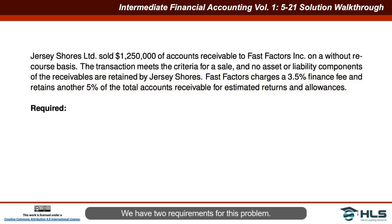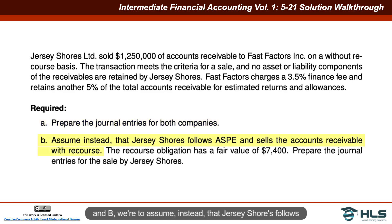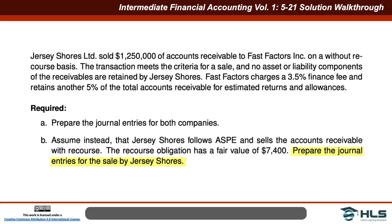We have two requirements for this problem. Requirement A is to prepare the journal entries for both companies. Requirement B assumes instead that Jersey Shore's follows ASPE and sells the accounts receivable with recourse — the obligation has a fair value of $7,400 — and we want to prepare the entries for the sale by Jersey Shore's.